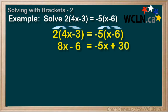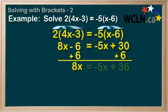At this point, we want the x terms on the left and the non-x terms on the right. This means that both the negative 6 and the negative 5x are out of place. Let's pick one and deal with it. Let's add 6 to both sides to start with. On the left, we have 8x. On the right, we have negative 5x, and 30 plus 6 is 36.